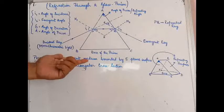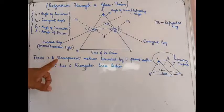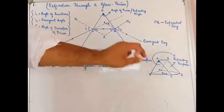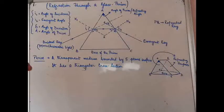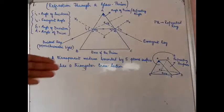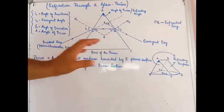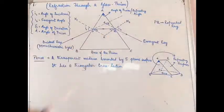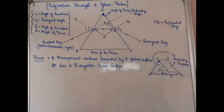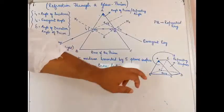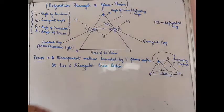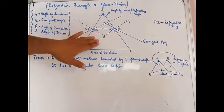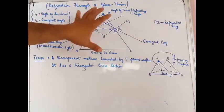A prism is a transparent medium — transparent because it is usually made up of glass, different types of glass — through which light can enter and come out. It is bounded by five plane surfaces. This chapter is about refraction of light at plane surfaces, and this prism is another plane surface we are going to deal with. I have drawn a rough three-dimensional diagram, and you need to visualize that it is not just a triangle — it is a full 3D object.